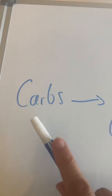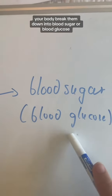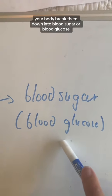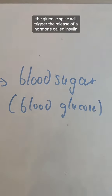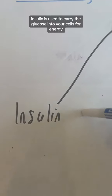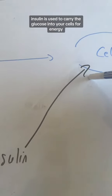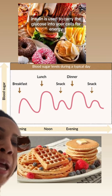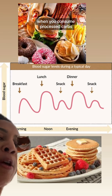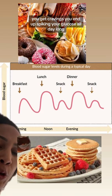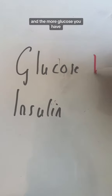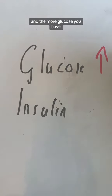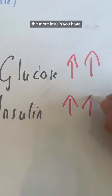When you consume carbs, your body breaks them down into blood sugar or blood glucose. The glucose spike will trigger the release of a hormone called insulin, which is used to carry the glucose into your cells for energy. When you consume processed carbs, you get cravings — you end up spiking your glucose all day long. And the more glucose you have, the more insulin you have.